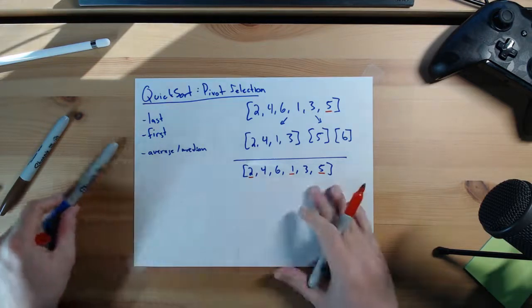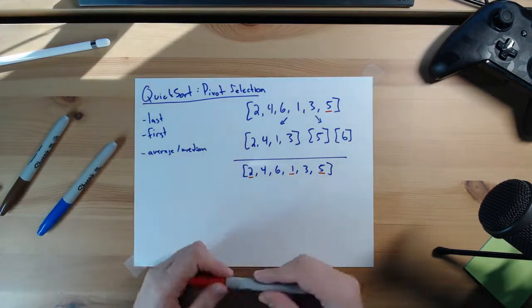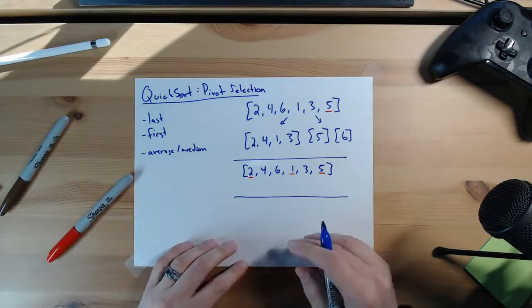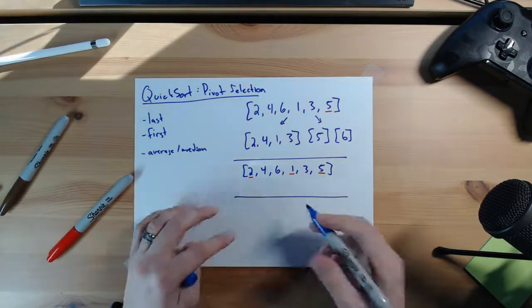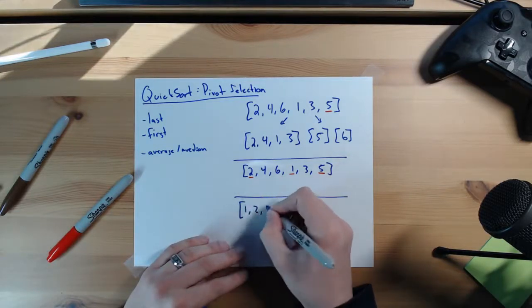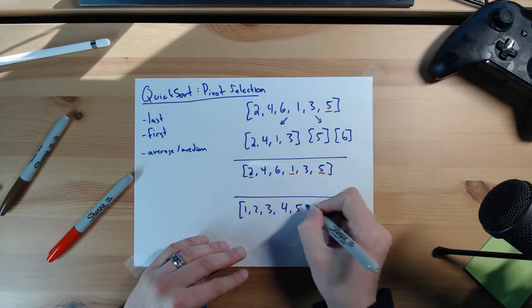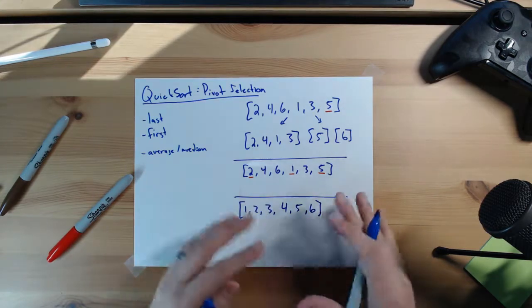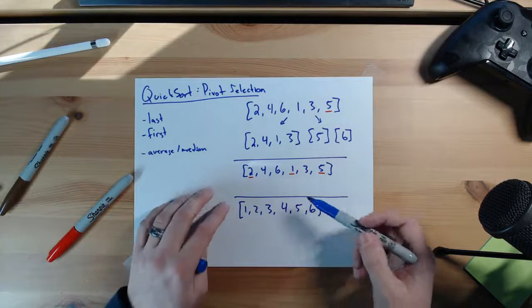Now the reason why we do this is because we can actually end up with that really big bad worst-case run time of O of n squared if we have a sorted array. So imagine we have this case of 1, 2, 3, 4, 5, 6 and we've gone with this pivot selection plan of last or first.